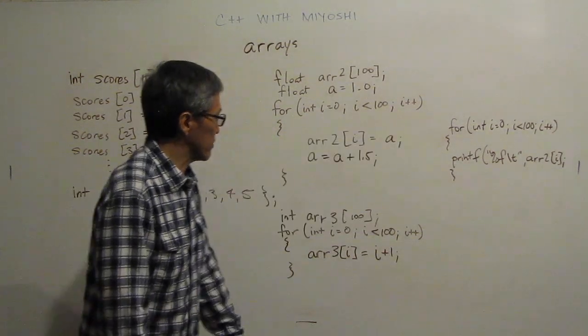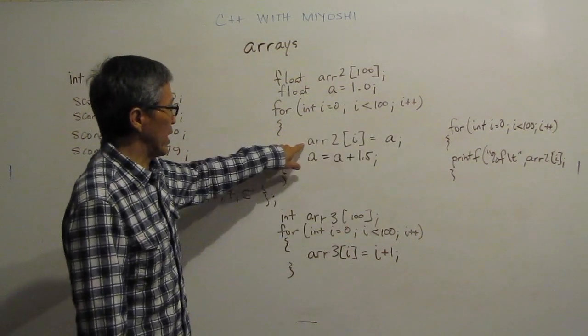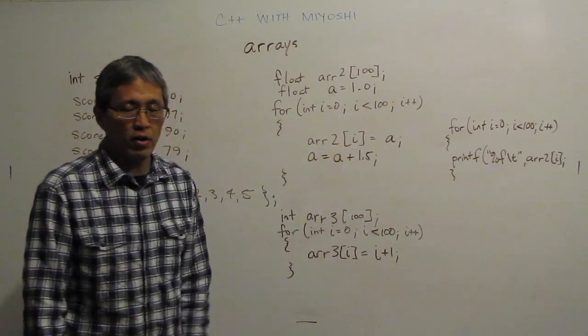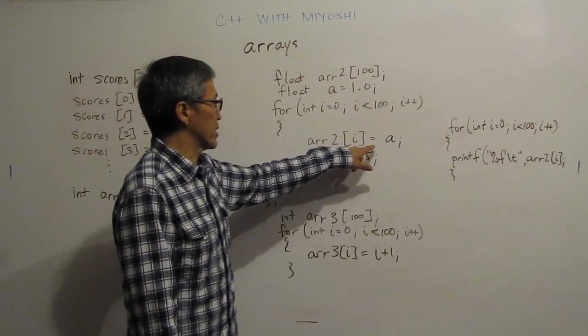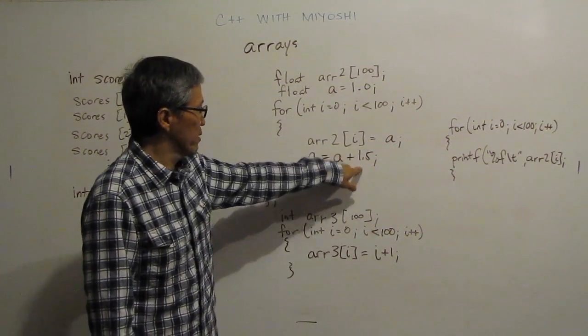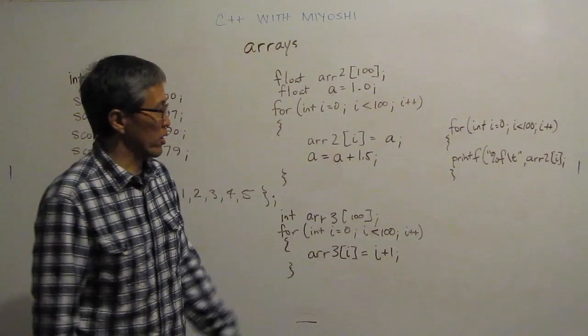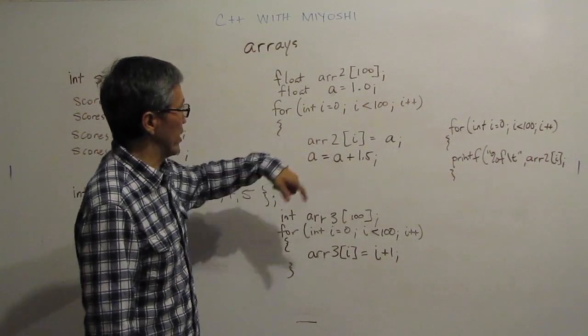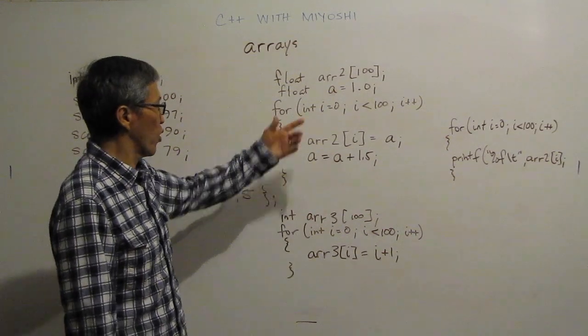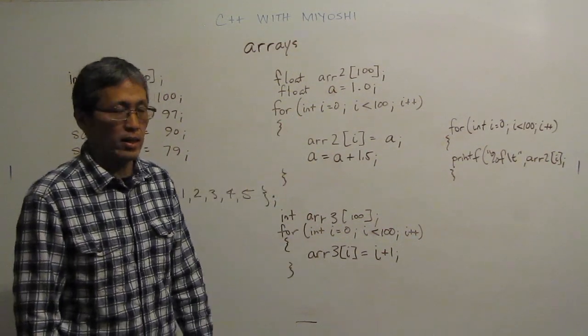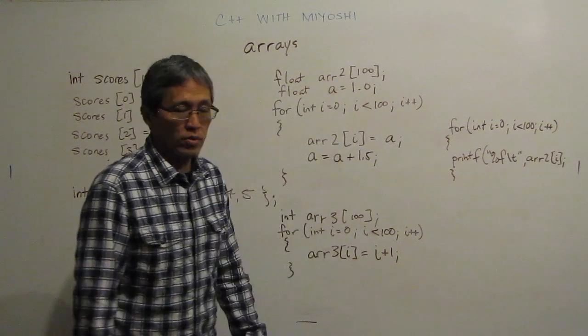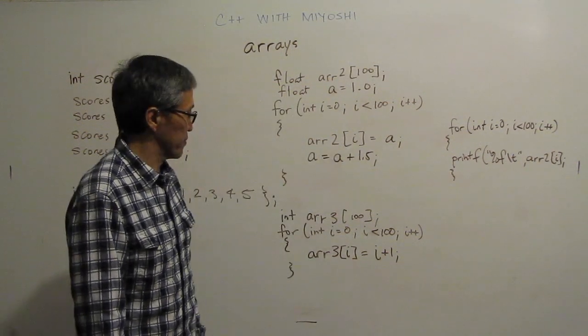And then I'm going to go i plus plus. Then all I'm going to do is address each one of them. So array two sub i or of an index of i is going to be assigned the value a. Here I have a set to value one and then I'm just going to increase a by 1.5 each time. So then I'll have 1 in there to begin with and then 2.5 and then 4 and so forth until I get all my values initialized.